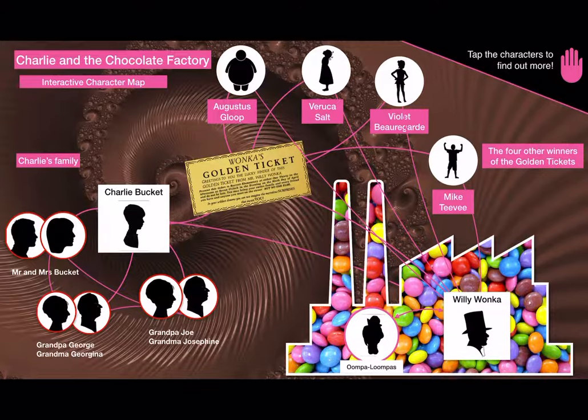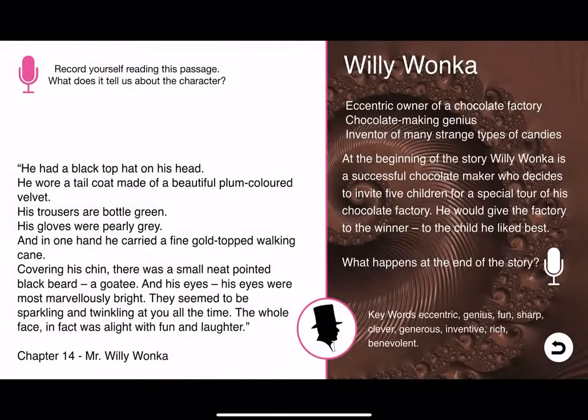If you tap on the character icon, you're taken to a detail page. On the left, you can see an excerpt from the book, and on the right, there's a description of the character. On the top left, I've included space for students to record audio so they can read the passage and tell us what they think about the character. And on the right, they can also tell us what they know — what happens to the character at the end of the story.